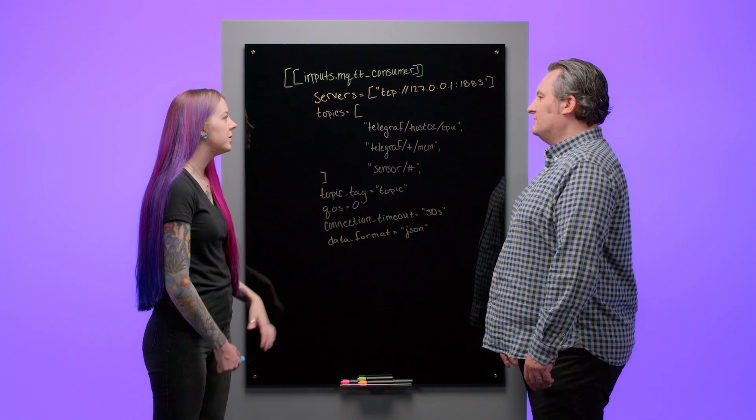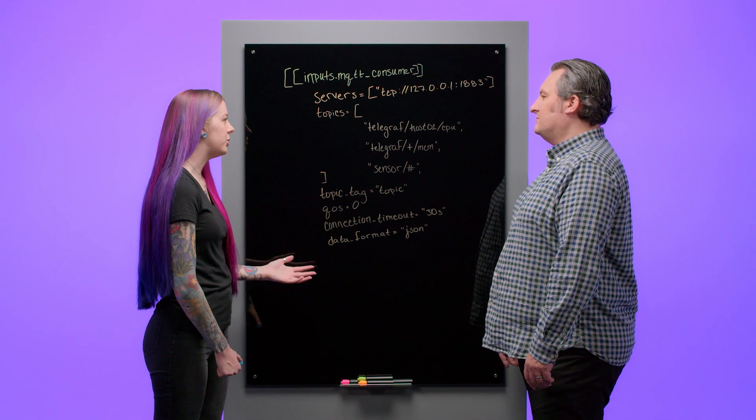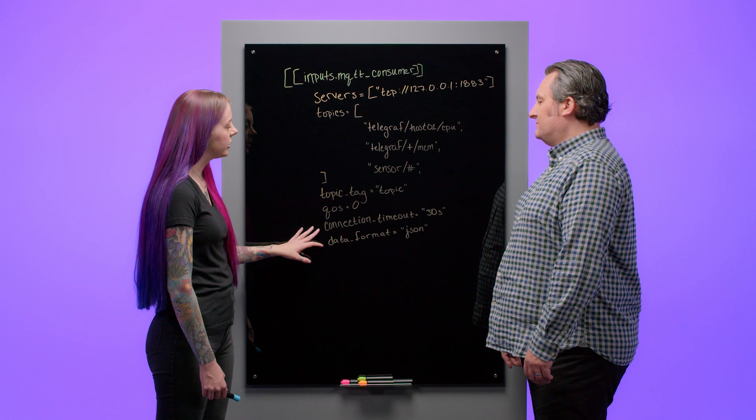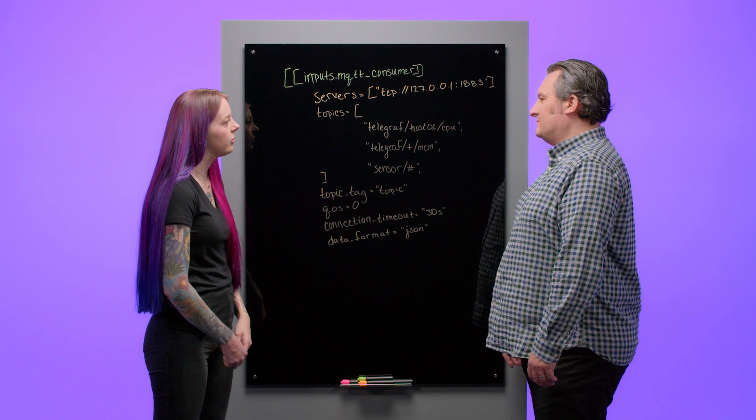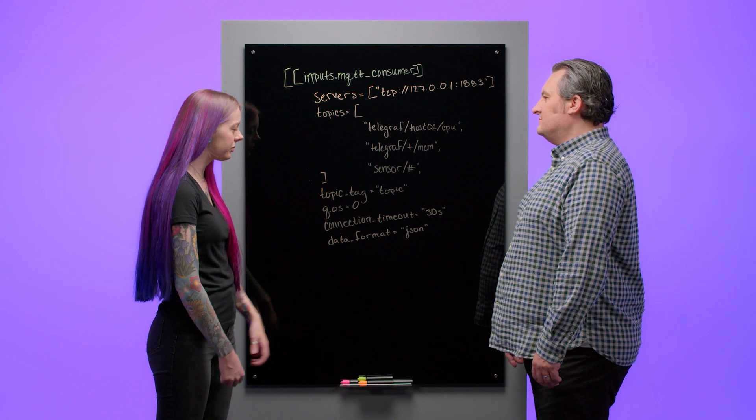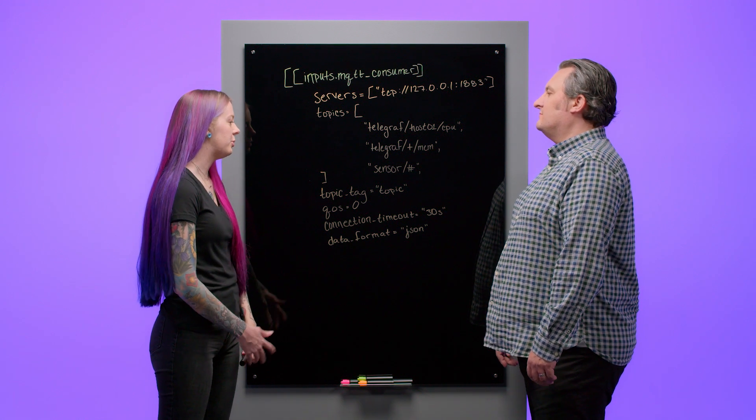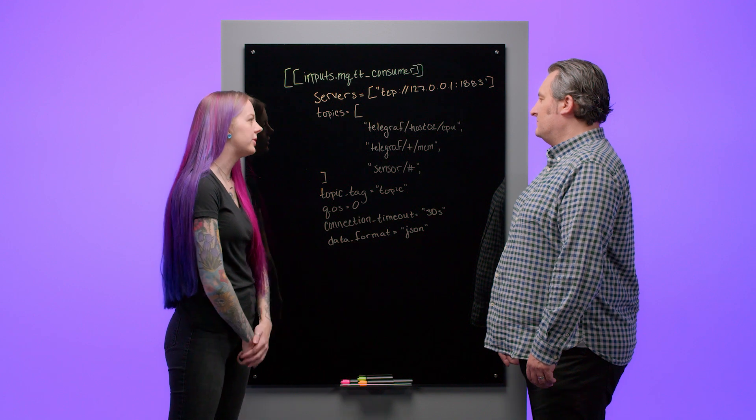We have QoS, which will default to 2, but Telegraph does support 0, 1, and 2. Our connection timeout, which is how long Telegraph will wait to connect to your broker. Here we have it set to 30 seconds. And the data format of the message being sent by your broker. In this example, JSON.